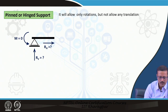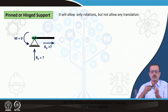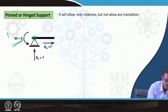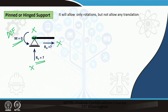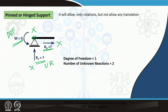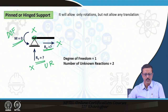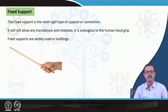In the hinge support, the degree of freedom is 1 because it cannot take any moment — under load it will rotate. However, it cannot move like a roller horizontally or vertically. So it has 2 unknown reactions. The degree of freedom is 1 and the number of unknown reactions is 2.